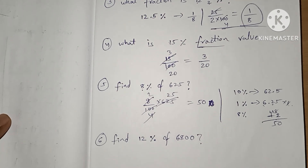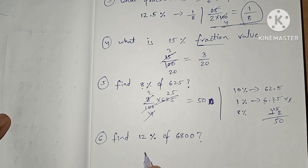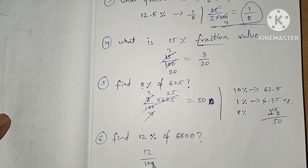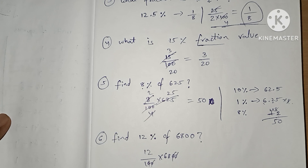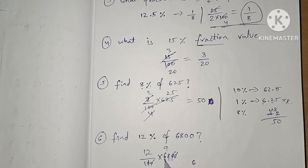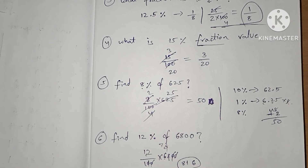Now question number 6: Find 12% of 6800. We do 12 divided by 100 into 6800. The two zeros cancel, leaving 12 times 68. 12 times 8 is 96, 12 times 6 is 72, and adding gives 816. So 816 is the answer.